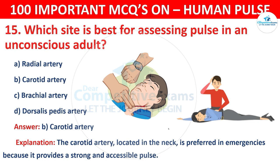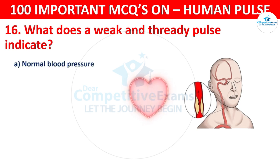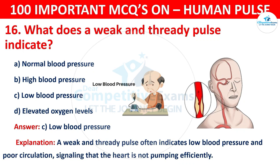Question number 16: What does a weak and thready pulse indicate? Options are: Normal blood pressure, High blood pressure, Low blood pressure, or Elevated oxygen levels. The correct answer is C, that is low blood pressure. A weak and thready pulse often indicates low blood pressure and poor circulation, signaling that the heart is not pumping efficiently.